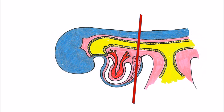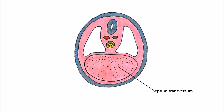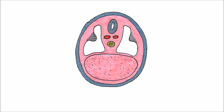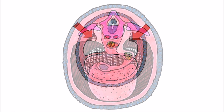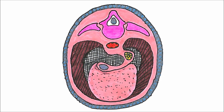Taking an axial cut right through the septum transversum, we can see the intraembryonic coelom — in this region called the pericardioperitoneal canals — which are connecting the pericardial and peritoneal cavities. As development proceeds, little folds from the lateral wall start to close those canals. These are called the pleuroperitoneal folds, and they get bigger and bigger until they close off this space entirely and fuse to the septum transversum.